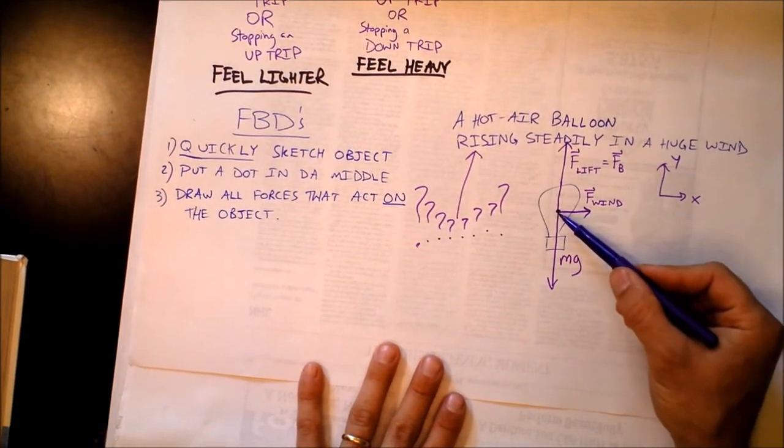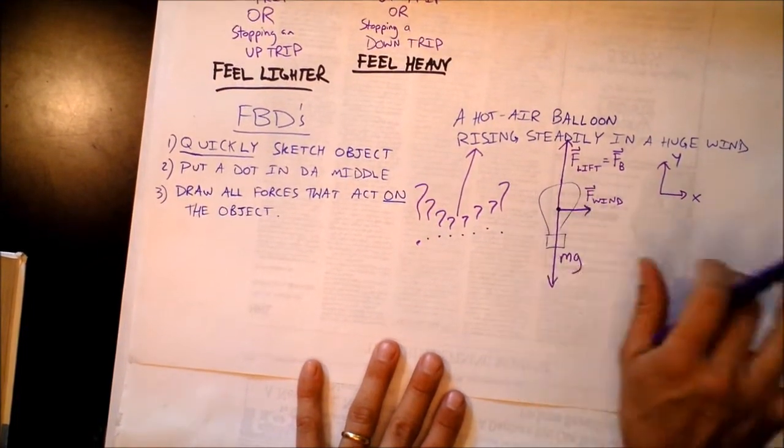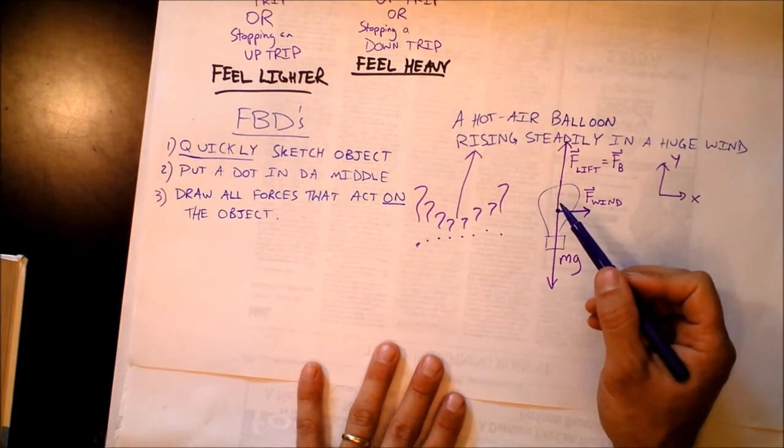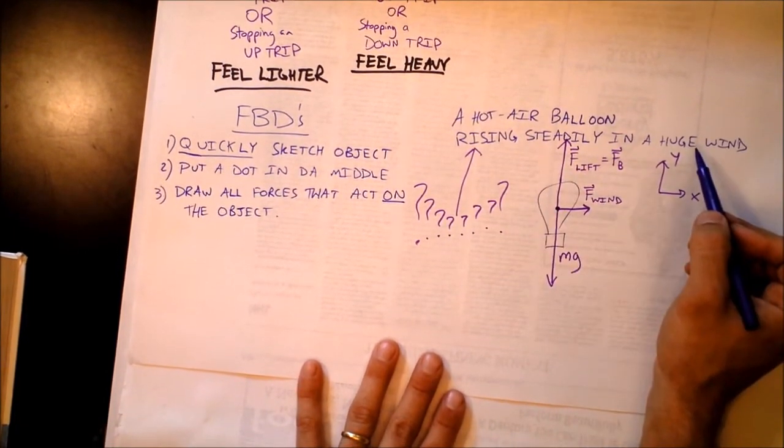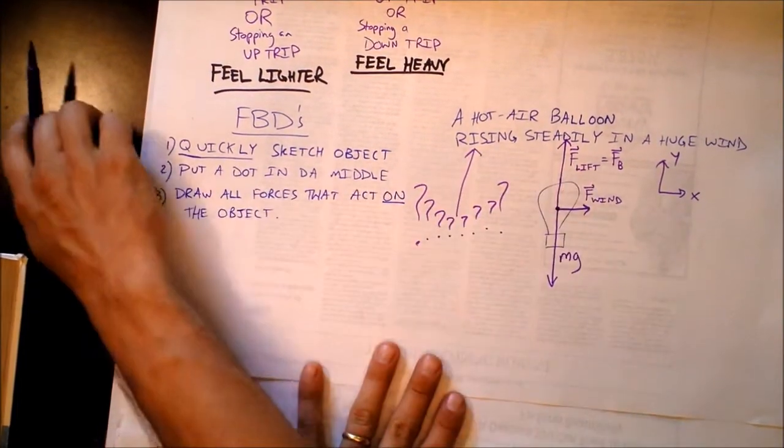For all you know, the balloon may be staying at a steady height and just accelerating to the right. But we know the balloon is rising steadily just because I labeled the free body diagram. But we're never going to show velocity on a free body diagram.